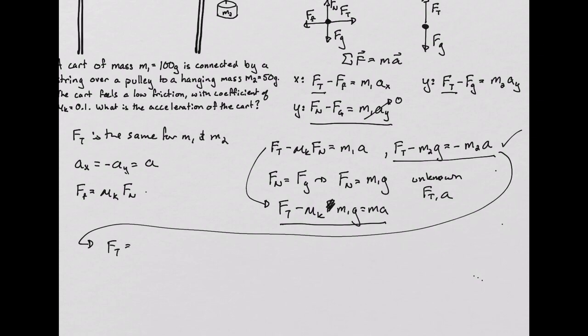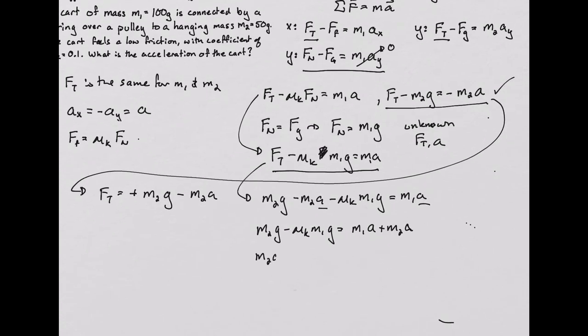Doing that, we find that the force due to tension is positive m2g minus m2 times the acceleration. Plugging that in to this equation gives us that equation. We need to move acceleration, which we have here and here to the same side of the equation, in order to factor it out. We are going to factor out that equation. And we are going to solve for a.